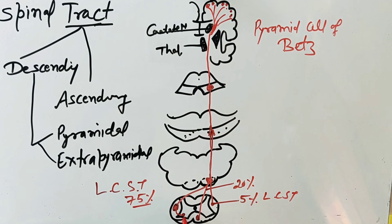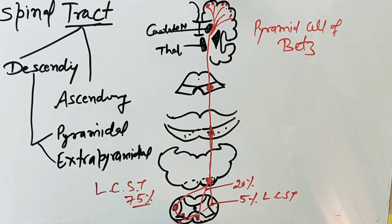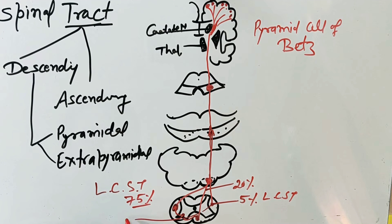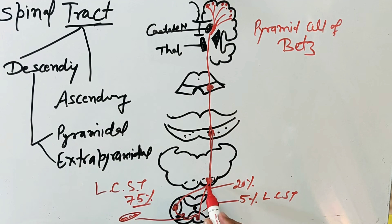The fibers synapse with the anterior horn cells. These fibers, after crossing, also synapse with the anterior horn cells at different levels. The 75% cross at the level of pyramidal decussation and the rest at different levels before termination. From here, fibers go to the respective muscles. These are the corticospinal fibers that pass through the pyramids — that is why they are known as pyramidal fibers.